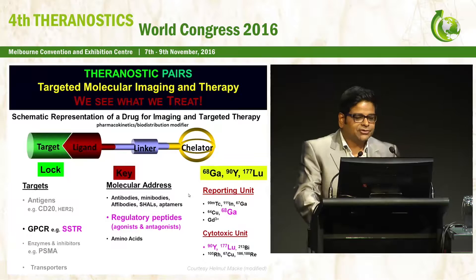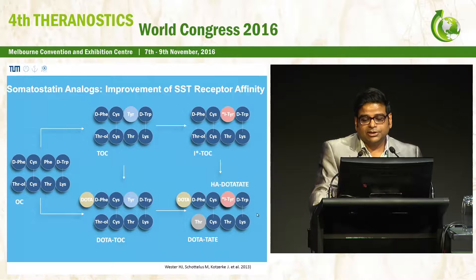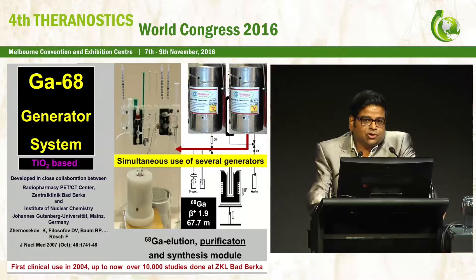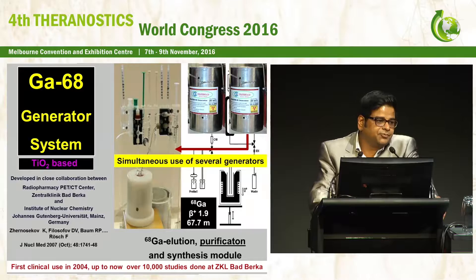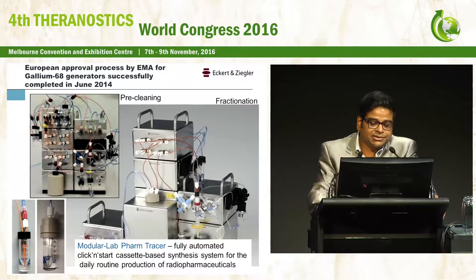Somatostatin analogues have undergone improvement over time with the goal to improve receptor affinity, from the oldest being DOTATOC to DOTATATE, and one of the latest being the so-called high affinity DOTATATE, which has more binding to somatostatin receptors. We have been doing routine gallium-68 PET studies and have performed more than 10,000 PET studies at our centre, making use of a titanium oxide-based generator system in close collaboration with Professor Rush, evolving from handmade generators to a fully automated click-and-start cassette-based synthesis system.